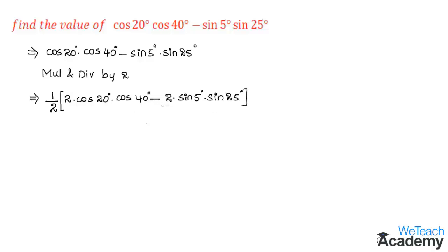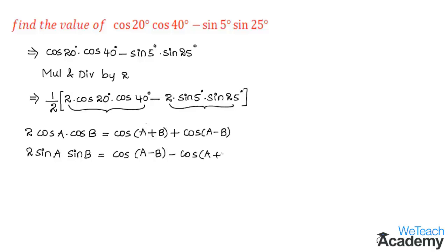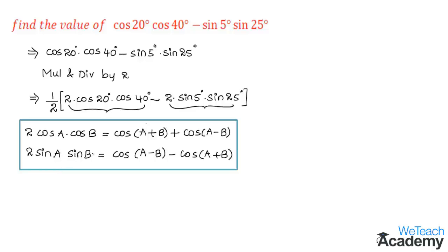Now let us identify which formulas we can use. The first term is in the form of 2cosA·cosB, and the formula is: 2cosA·cosB = cos(A+B) + cos(A−B). For the second term we use: 2sinA·sinB = cos(A−B) − cos(A+B). Using both these formulas, let us expand both terms.